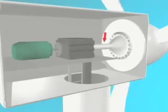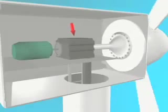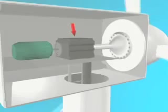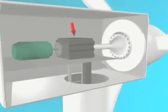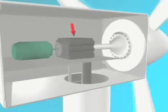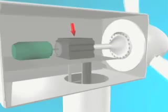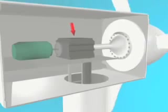Here a magnetic rotor spins inside loops of copper wire. This causes electrons inside the copper to flow, creating electrical energy — what we call electricity in our daily lives.